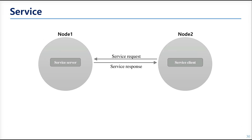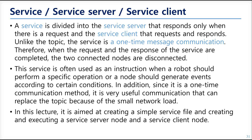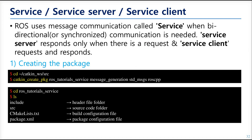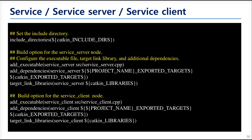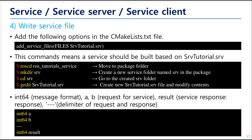The next is service communication. Service communication happens between the service server, which responds only when there is a request, and the service client, which sends requests and gets responses. We already learned about this, so let's skip the description and make and run the nodes. Now we start making a new package for service communication. The only difference in CMakeLists.txt compared to topic communication is that there is a line for add_service_files instead of add_message_files. We also need to make an extra service message file for this tutorial.